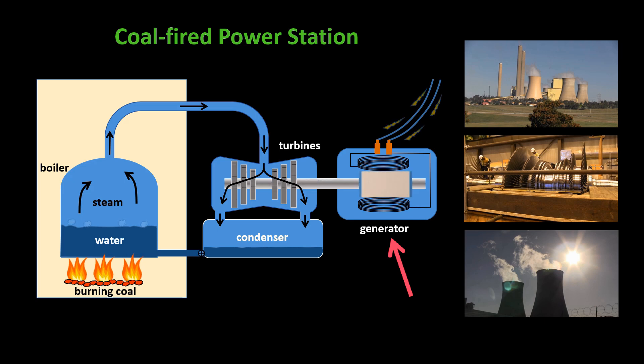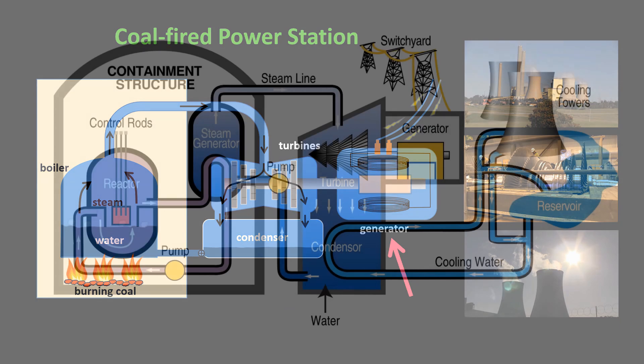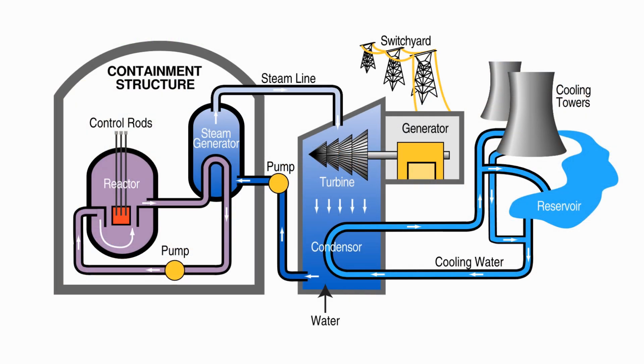Nuclear power stations are more complicated, but they basically work the same way. However, instead of burning coal to produce heat to produce steam, they use uranium-235 or plutonium-239 to produce heat, to produce steam. The heat is generated inside the nuclear reactor.